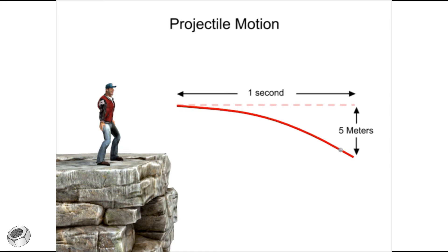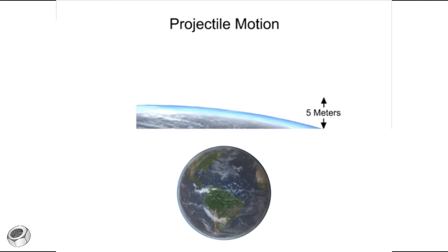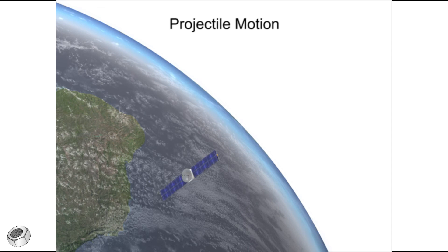However, because the Earth is curved, dropping five meters for every 8,000 meters tangent to its surface, there is the potential to launch a projectile so fast and far that it falls around the Earth rather than into it. These objects are known as satellites.